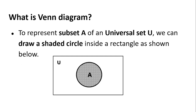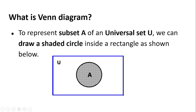Let's look at a simple Venn diagram. We have a rectangle that represents the universal set — the entire universe. Within this, we represent our set as a circle. All the points within this particular circle are the elements of that set. We shade them to indicate that this is the region we are interested in.